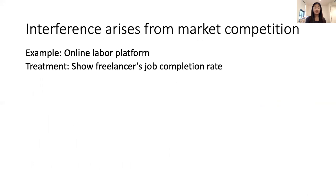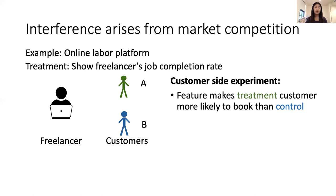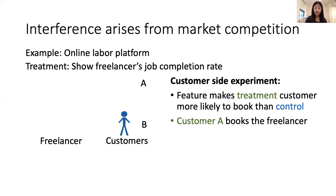Let's walk through a toy example to see how exactly this interference leads to a bias. Consider a toy example of an online labor platform where we have one freelancer and two customers. The platform is considering a new treatment where they show the freelancer's previous job completion rate. They run a customer-side experiment: they randomize customer A into treatment, who will see this job completion rate, and customer B will be in control and will not see it. Suppose the feature makes the treatment customer more likely to book than if they were in control, so customer A wants to book the freelancer.